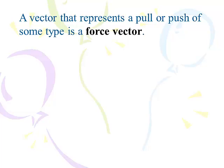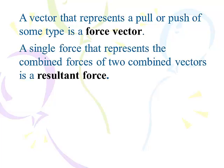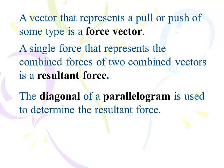A vector that represents a push or a pull is a force vector. That's mostly what we're going to be working with. A single force that represents the combined forces of two vectors is a resultant force. This happens when you hit a golf ball — you give it direction and magnitude, and then the wind hits it, and where the ball ends up is the resultant force. We'll use the diagonal of a parallelogram to determine the resultant force; each side represents one of the two forces.